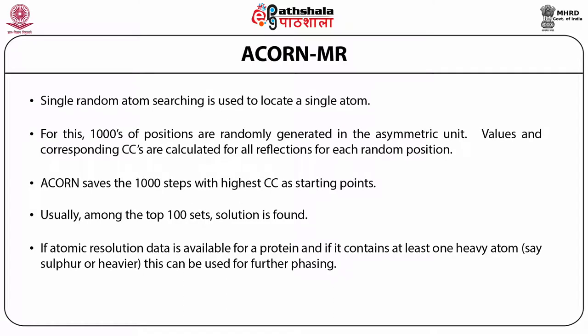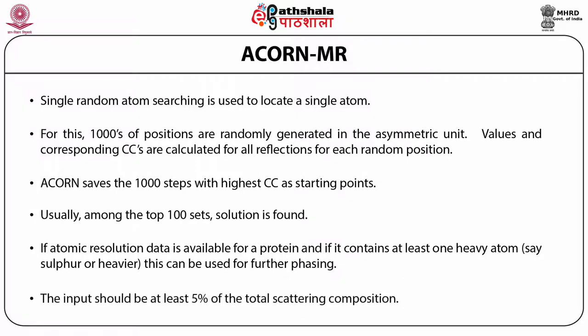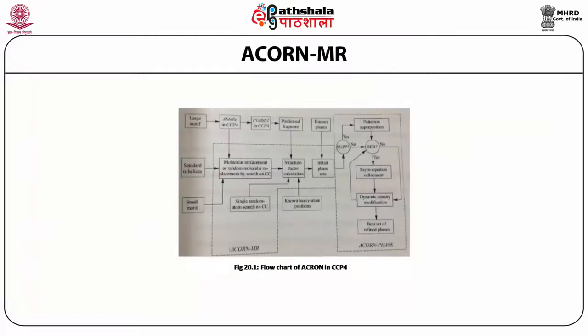If atomic resolution data is available for a protein and if it contains at least one heavy atom, such as sulfur, this can be used for further phasing. In this procedure, for phospholipase A2, we use the calcium atom to do the entire phasing. The input should be at least 5% of the total scattering composition. This shows the flowchart of ACON in CCP4, where the left-hand side shows the ACON MR molecular replacement part and the right-hand side block shows the ACON phase.